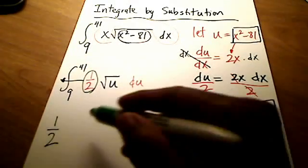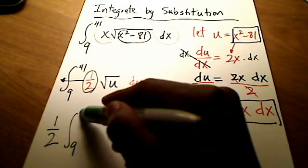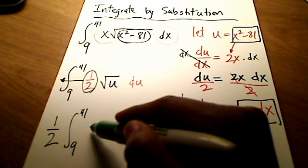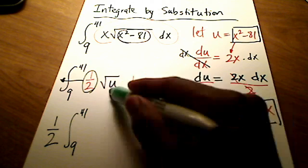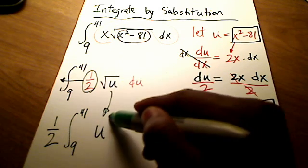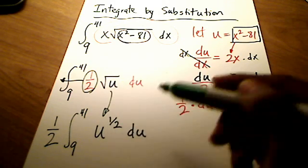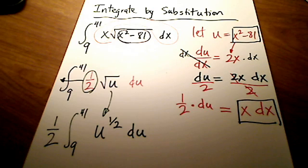Alright. You can write it like this. 1 half from 9 up to 41 of u. Right. The square root of u du. But watch how I'm going to write the square root of u. I'm going to write it this way. Alright. I'm writing it that way on purpose. Okay. So I just moved the constant of 1 half, constant multiple of 1 half outside of my integrand symbol, integral symbol there.